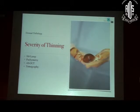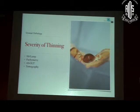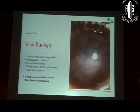There are various instruments available to assess thinning. A pachymetry map is always better compared to a single-point measurement, because it will tell you exactly the location of the thinnest point, you can quantify it much better, you can return to the same point again, and it also gives you the extent of the thinning.